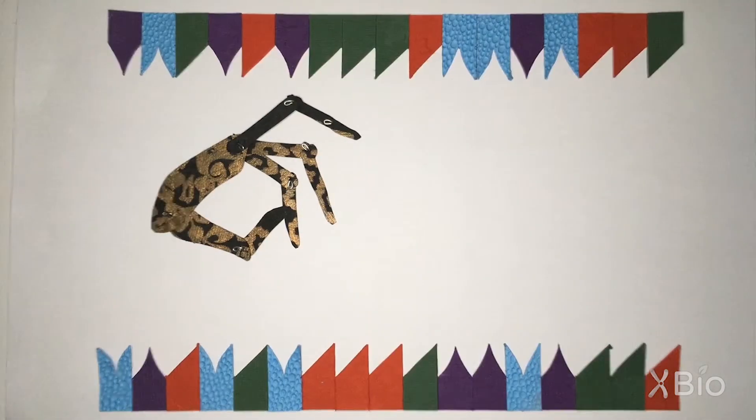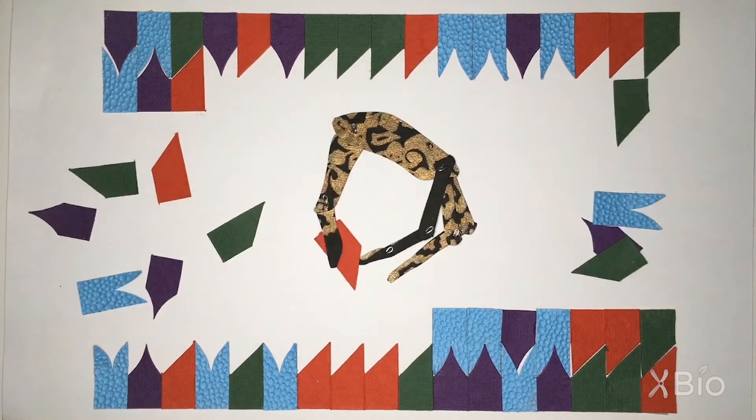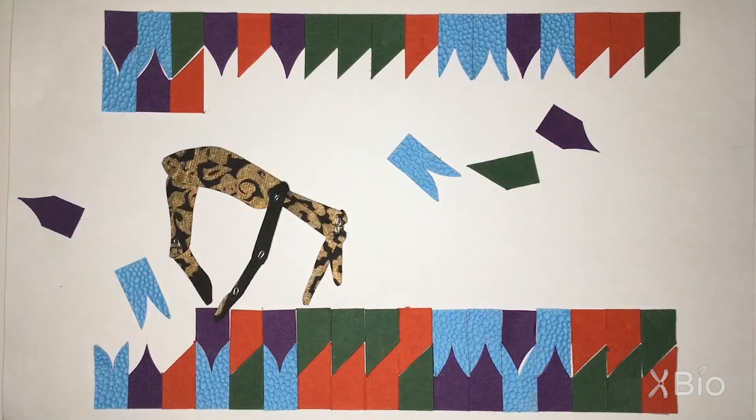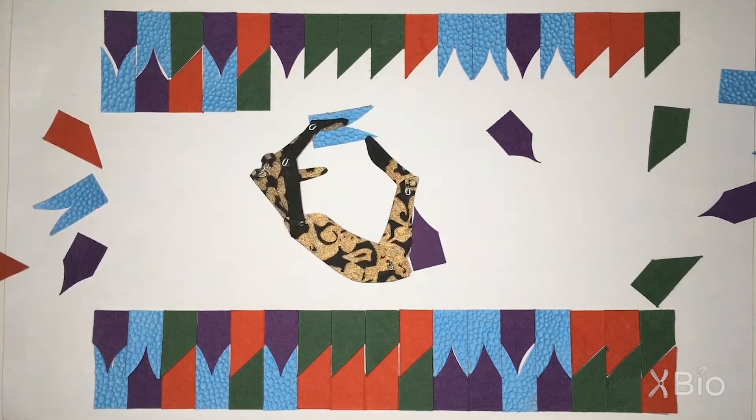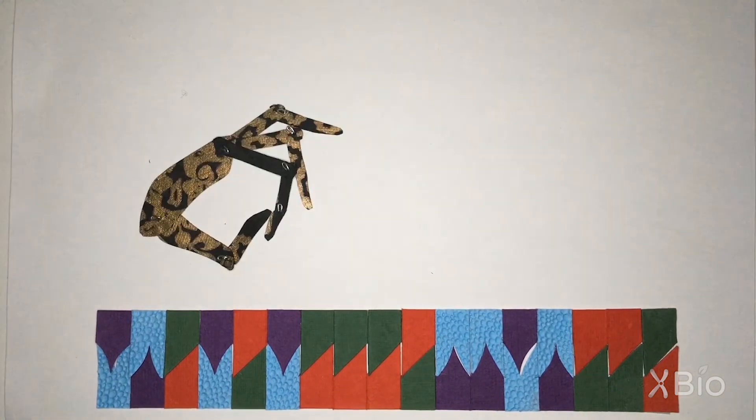But anyway, the complementary strands are pulled apart, and primers stick based on the order of their nucleotides. They act as signposts for DNA polymerase to start running along the DNA template strands, pulling in complementary bases one by one by one, until two new copies of the piece of DNA are finished.